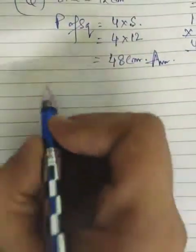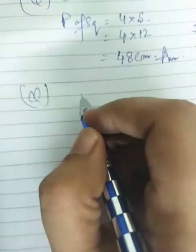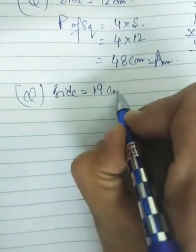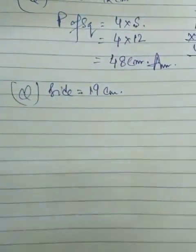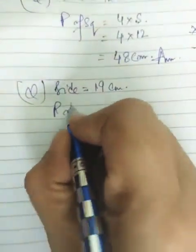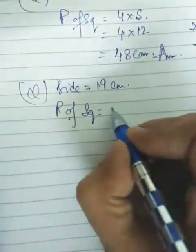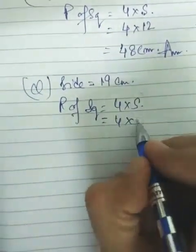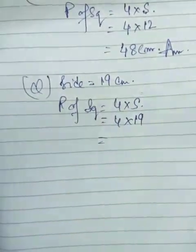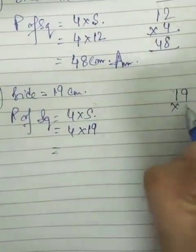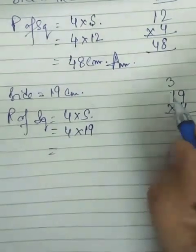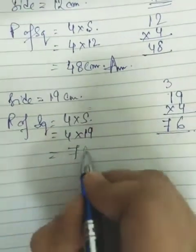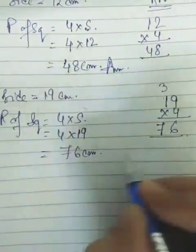Let us do one more sum. The side is equal to 19 cm. The perimeter of the square will be 4 into S, which is 4 into 19. Doing the calculation: 4 nines are 36, write 6 carry 3; 4 ones are 4, plus 3 is 7. So it is 76 centimeters, and that is the answer.